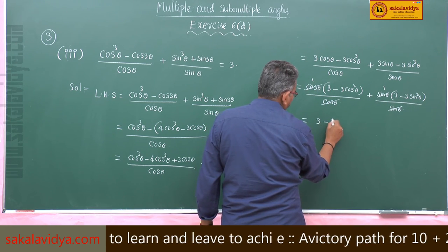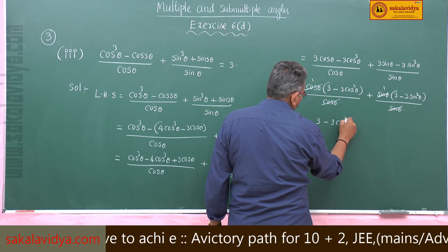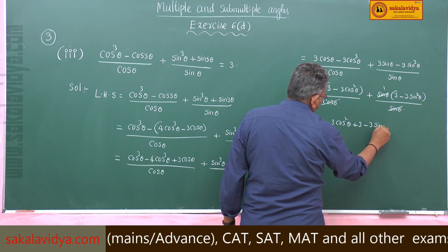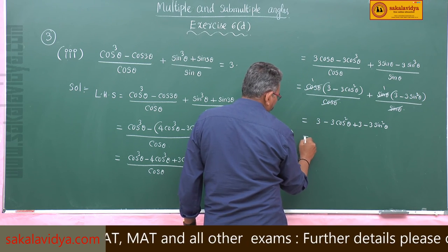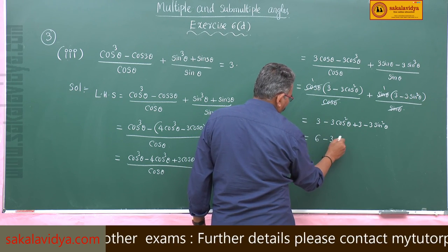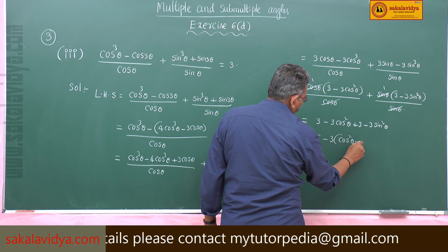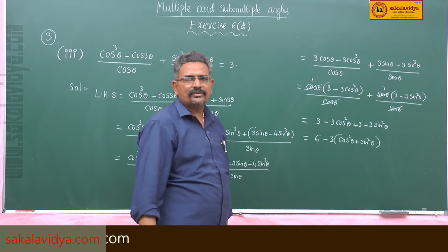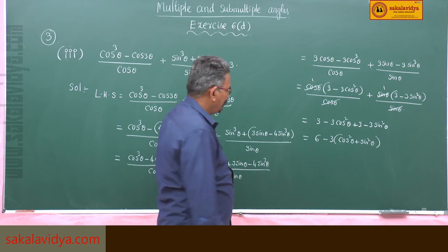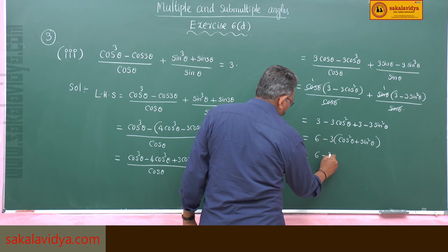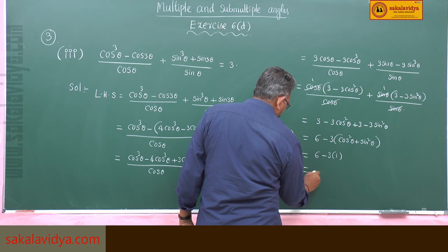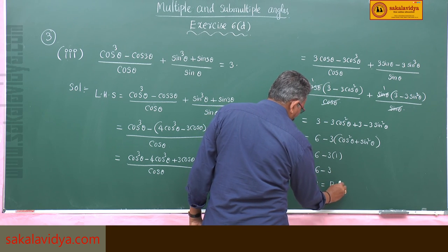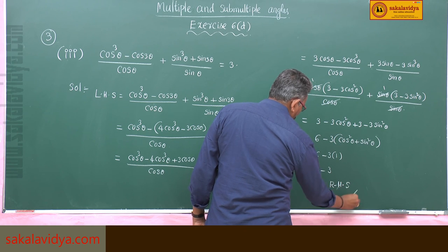We have (3 − 3cos²θ) + (3 − 3sin²θ). That gives 6 − 3(cos²θ + sin²θ). Since cos²θ + sin²θ = 1, we get 6 − 3×1 = 6 − 3 = 3, which is the RHS. Hence it is proved.